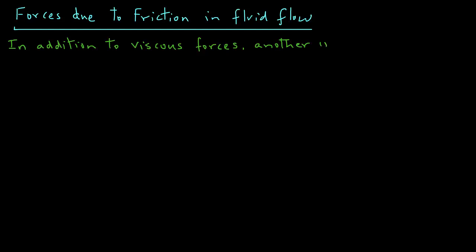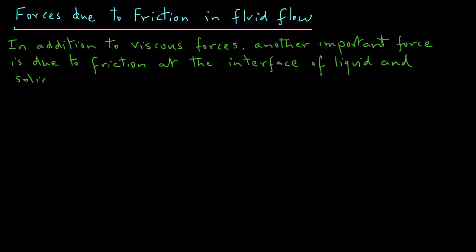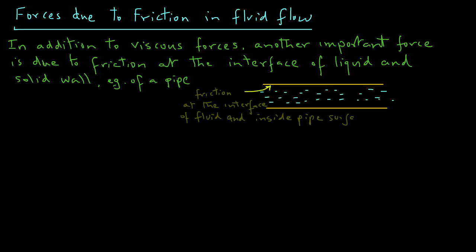But in addition to viscous force, there are other forces also that tend to oppose the flow, and one of them is the friction that happens between the fluid and the interface of that fluid with a solid wall. For example, if you are pumping water in a pipe, then the inside pipe surface causes a certain amount of friction which tends to oppose the flow.